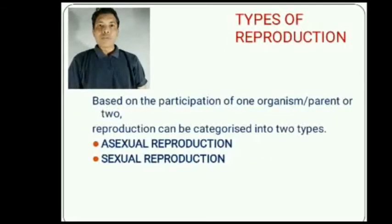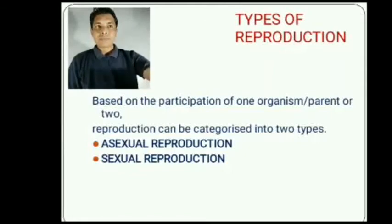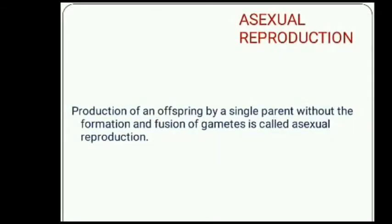Based on the participation of one parent or two, there are two types of reproduction: asexual reproduction and sexual reproduction. What is asexual reproduction? Reproduction of an offspring by a single parent without the formation and fusion of gametes is called asexual reproduction.